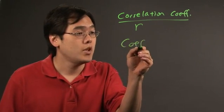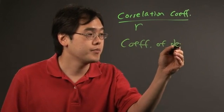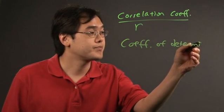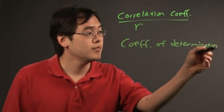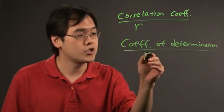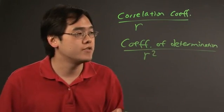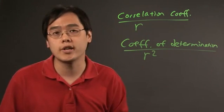The coefficient of determination is denoted by r squared. So basically, to find the coefficient of determination, you're squaring the correlation coefficient.